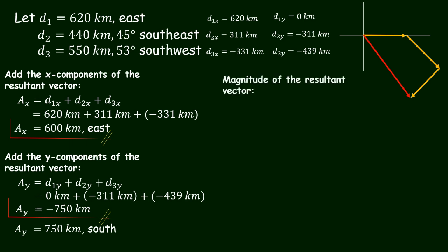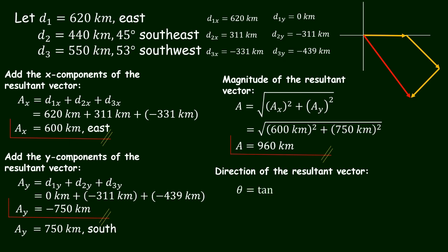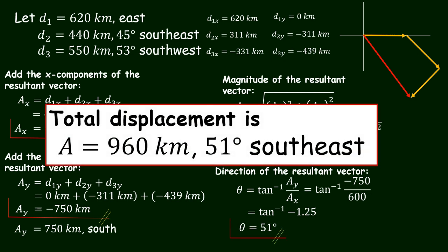Next, we solve for the magnitude of the resultant vector. The equation is A equals the square root of A sub x squared plus A sub y squared. By substitution, we have the square root of 600 kilometers squared plus 750 kilometers squared, giving a result of 960 kilometers. For the direction of the resultant vector, theta equals tangent inverse of A sub y over A sub x, which equals tangent inverse of negative 750 over 600, giving tangent inverse of negative 1.25. Taking the inverse tan, theta equals 51 degrees. Thus, the total displacement is 960 kilometers at 51 degrees southeast.